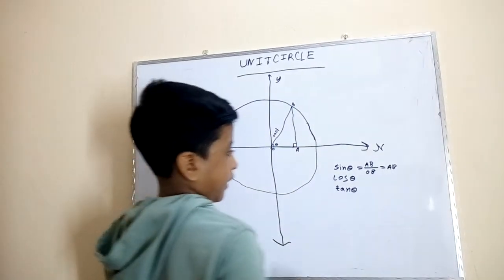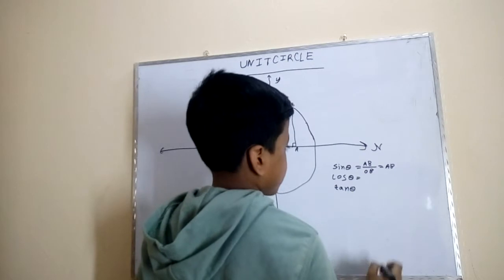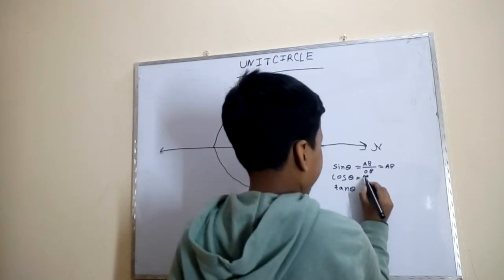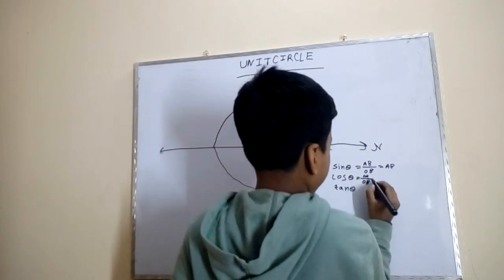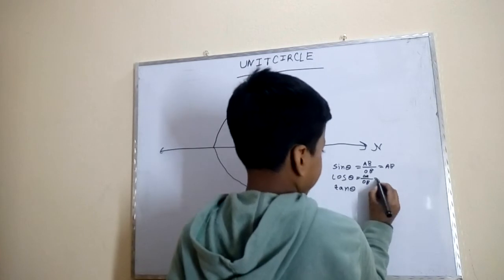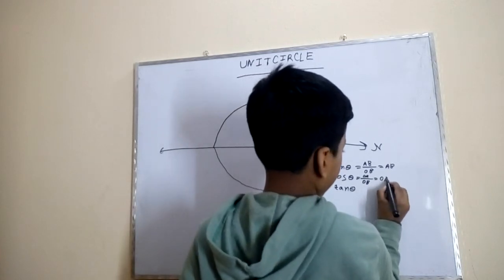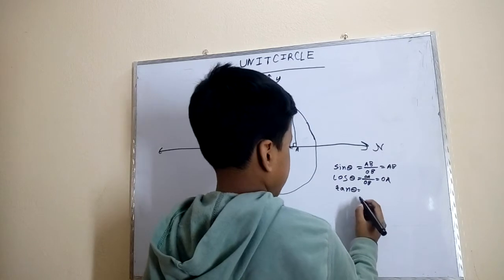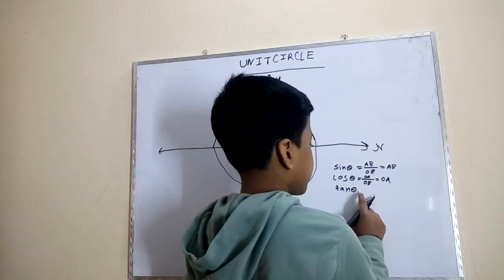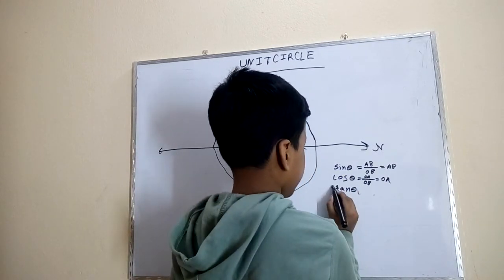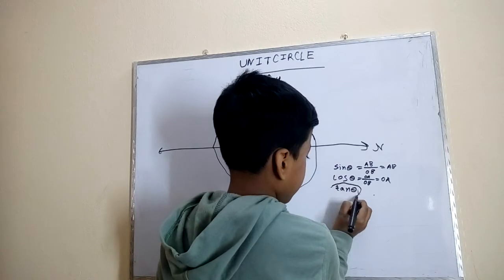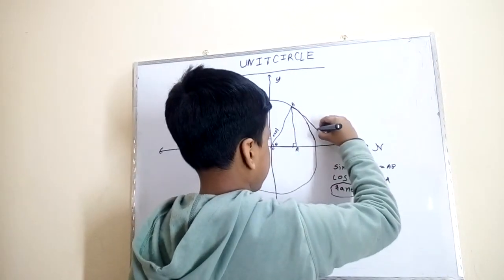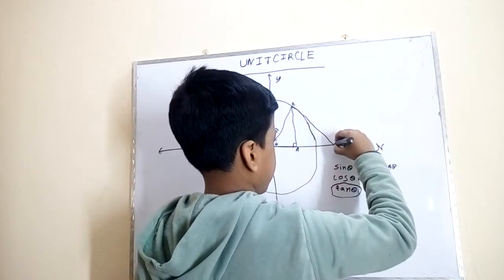R means the radius. Cosine will be OA over OB. Again OB is one, so cos theta equals OA. And tan theta — tan theta is just this line.